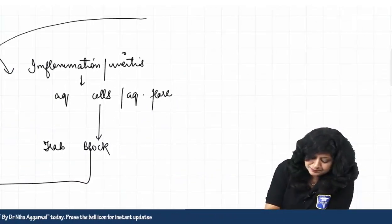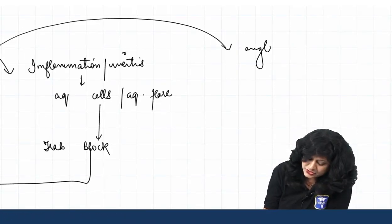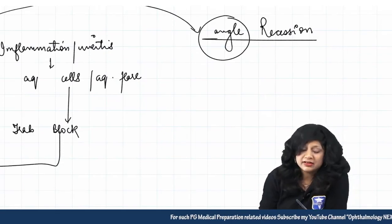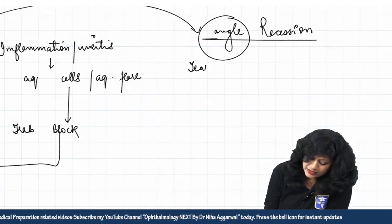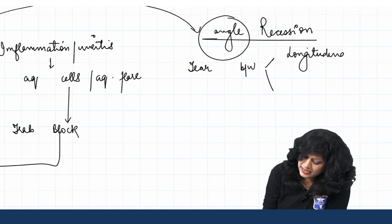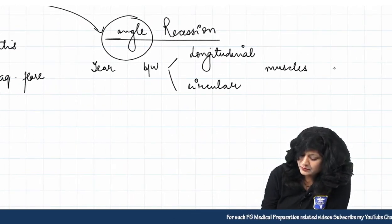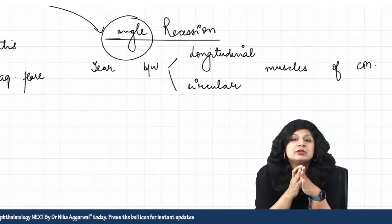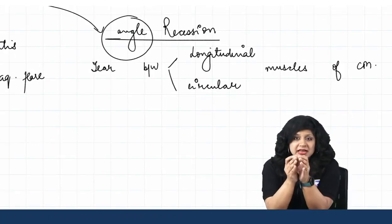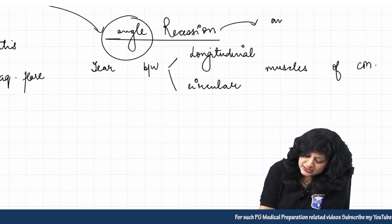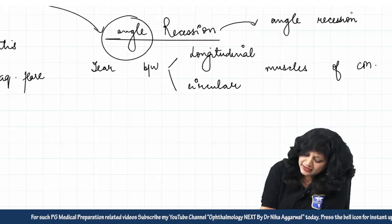Another important thing that blunt trauma can cause is angle recession. What do we mean by angle recession? Angle recession means there is a distortion at the angle — specifically a tear between the longitudinal and circular muscles of the ciliary body. If there is a separation between these two muscles, there will be broadening and distortion of the angle. This is called angle recession glaucoma.